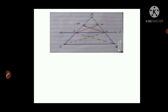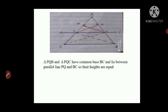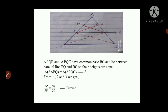Now the key step: triangles PQB and PQC have common base PQ and lie between the parallel lines PQ and BC. So their areas are equal — Statement 3. From Statements 1, 2, and 3, we get AP / PB = AQ / QC. This proves that if a line is parallel to a side of a triangle and intersects the remaining sides in two distinct points, it divides those sides in the same proportion.